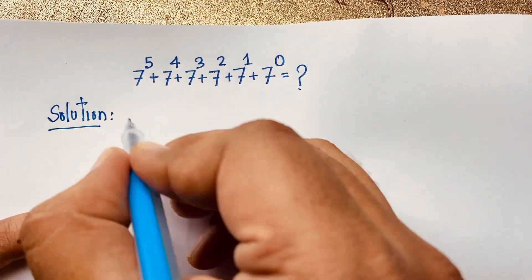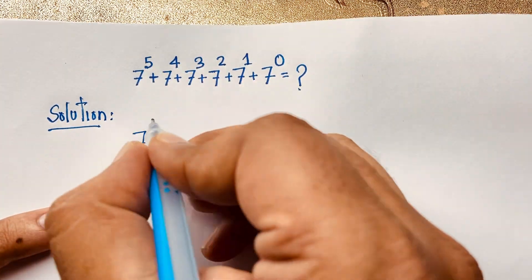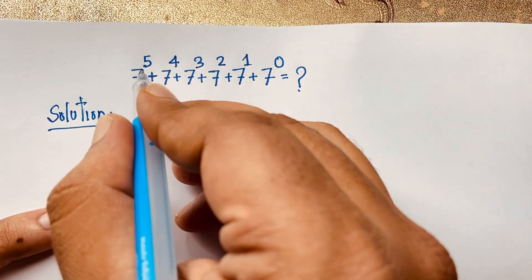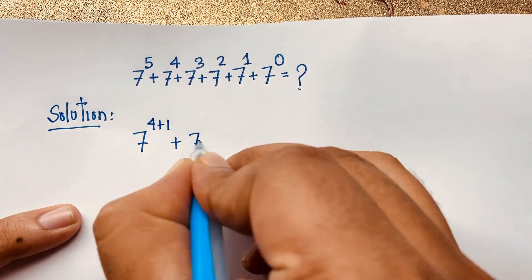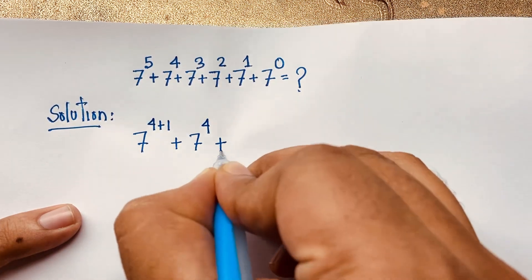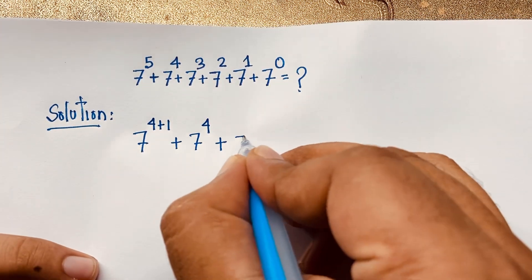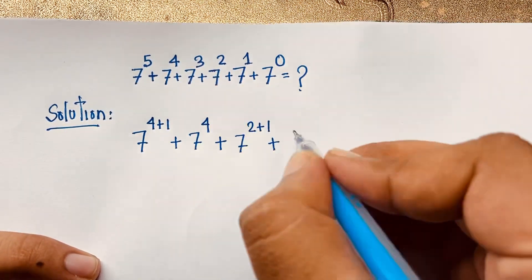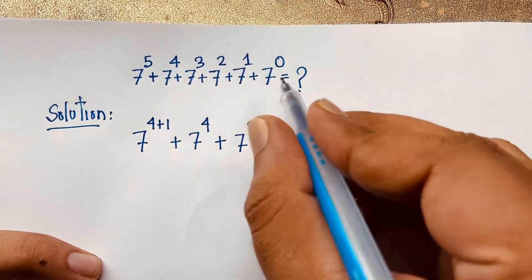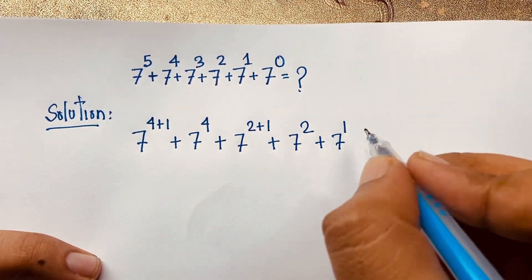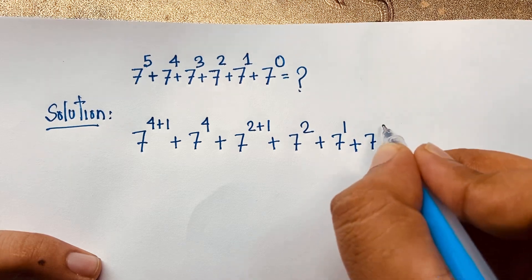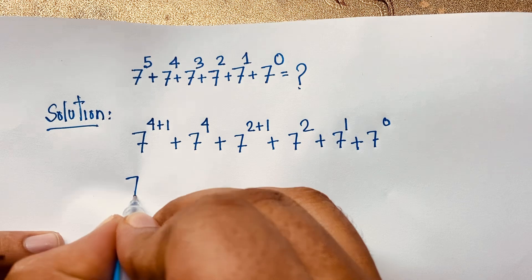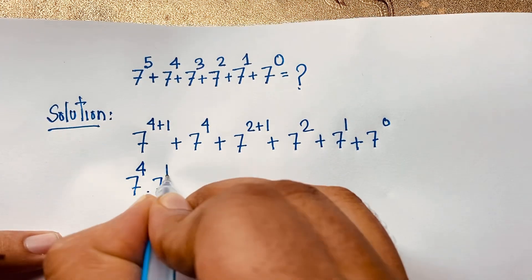Here, 7 to the power 5 — I can write the exponent 5 as 4 plus 1. So it becomes 7 to the power (4 plus 1), plus 7 to the power 4, plus 7 to the power 3 — which I write as (2 plus 1), plus 7 to the power 2, plus 7 to the power 1, plus 7 to the power 0. Now I can see 7 to the power 4 times 7 to the power 1.